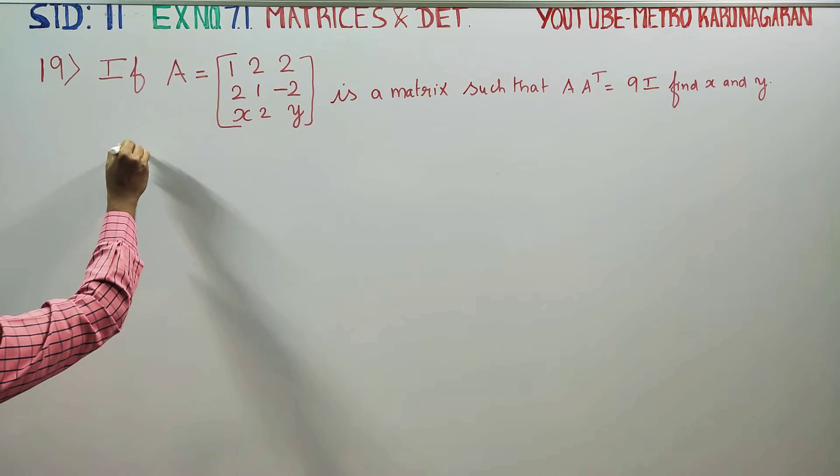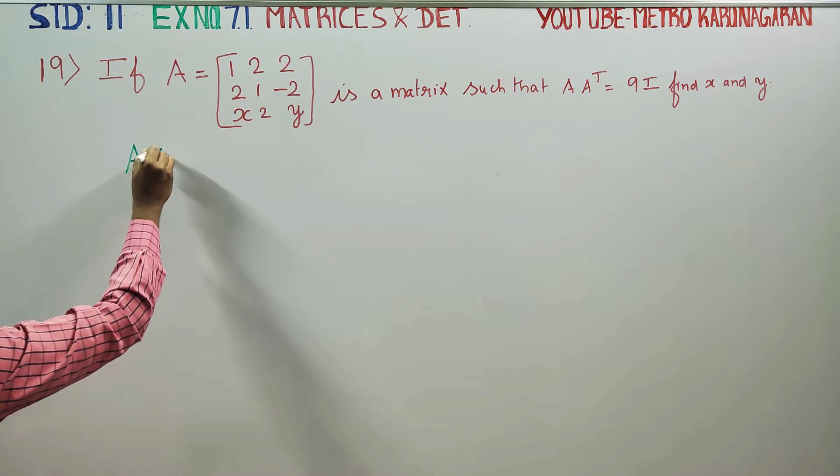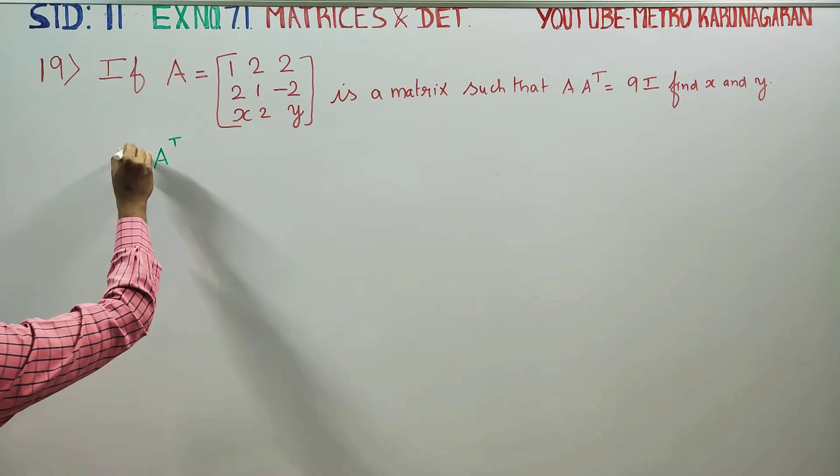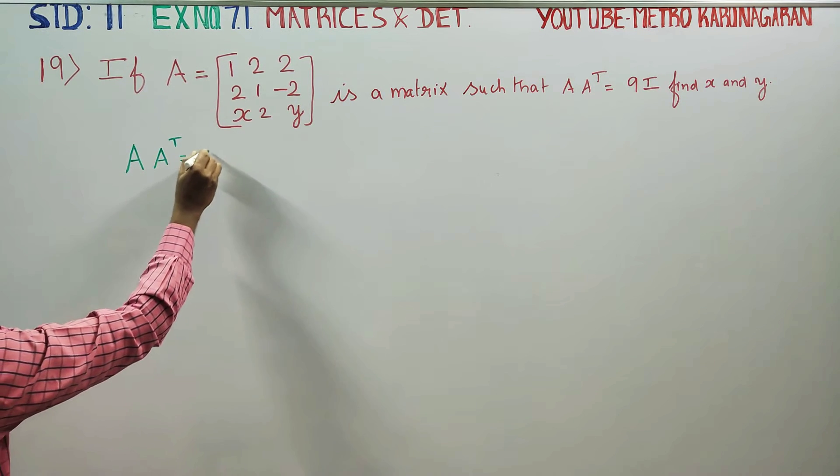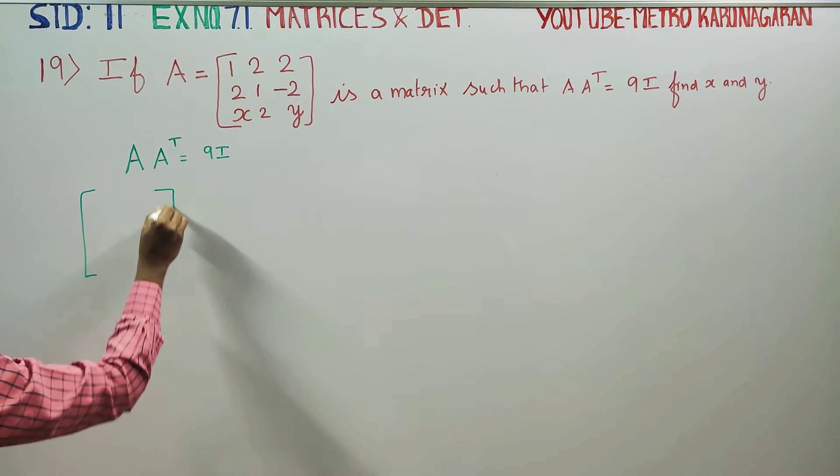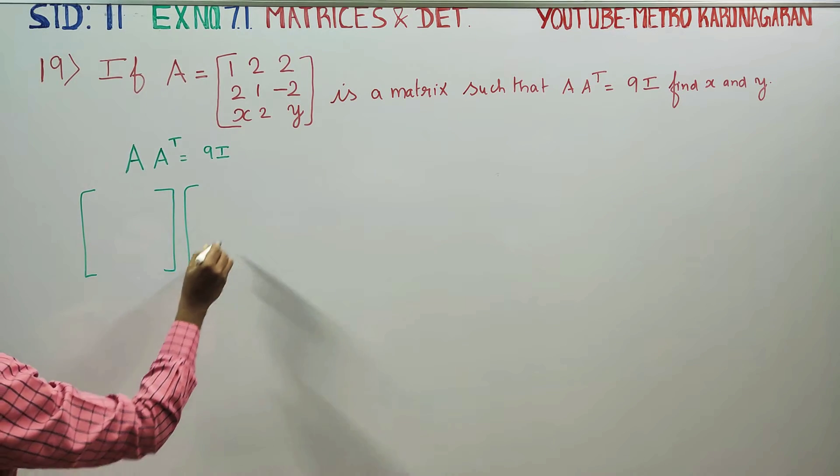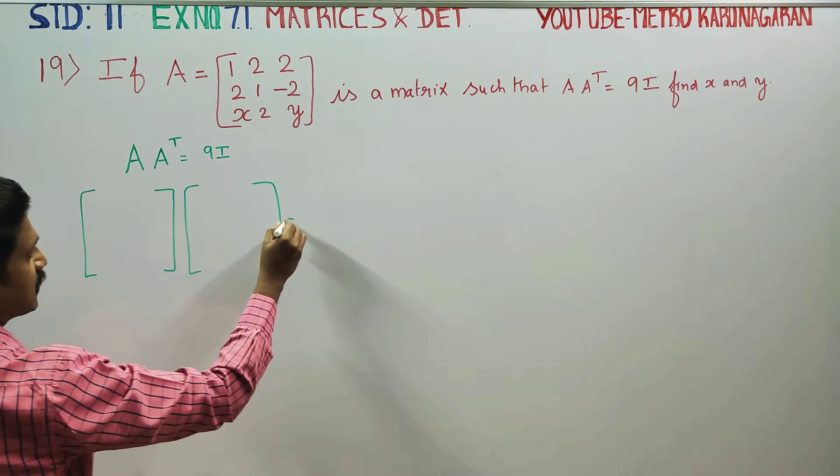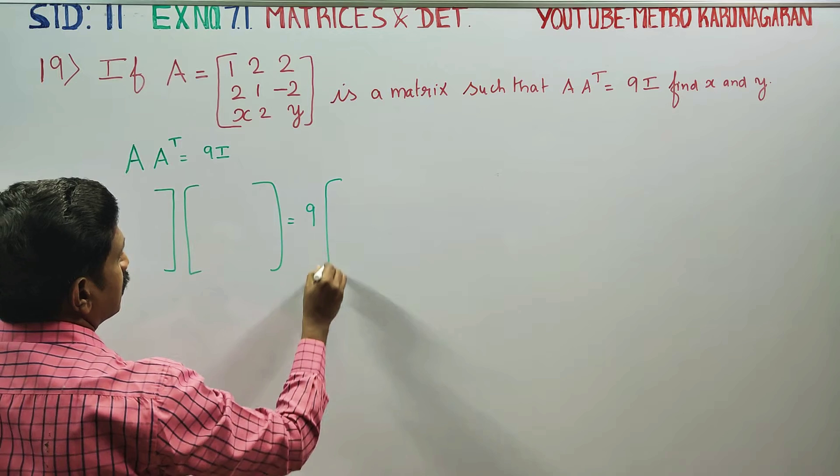It is given that A into A transpose is equal to 9I. I am going to start multiplying A matrix and A transpose is equal to 9 into I matrix.